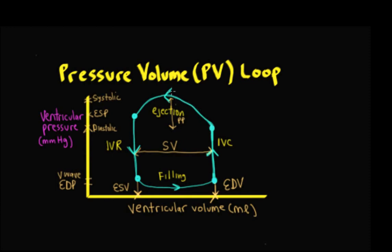During IVC, the volume doesn't change until the ventricular pressure exceeds the minimum pressure in the great arteries — the diastolic pressure. We then have ejection, where the ventricular pressure reaches a max, the systolic pressure, and then starts to fall. The period of ejection ends at the end systolic pressure, where the semilunar valves close. Then as ventricular pressure falls and volume remains the same, we have the period of isovolumetric relaxation until pressure drops below the atrial pressure at the peak of the V wave, where the AV valves open and ventricular filling begins.